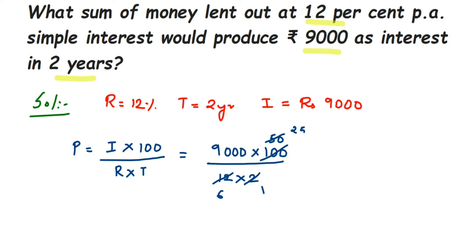We have 25 and 6 left. Now cancel 9,000 and 6 using the 3 times table: 3 twos are 6, and 3 threes are 9, so 9,000 divided by 6 gives 1,500. Then cancel 2 and 3,000: 2 ones are 2, giving 1,500. So in the numerator we have 1,500 and 25; in the denominator we have 1.